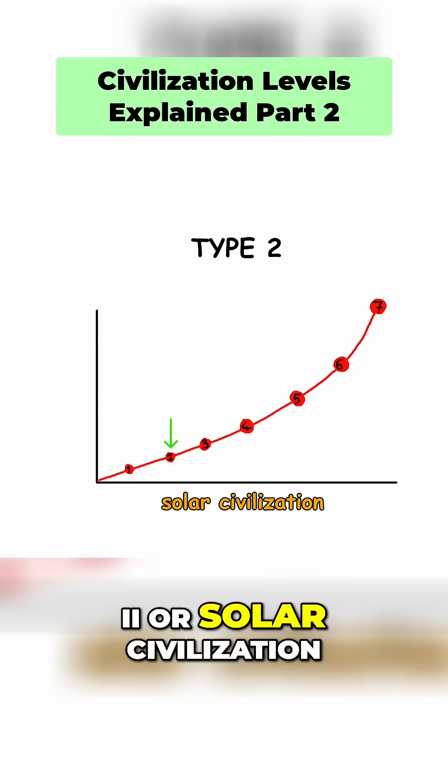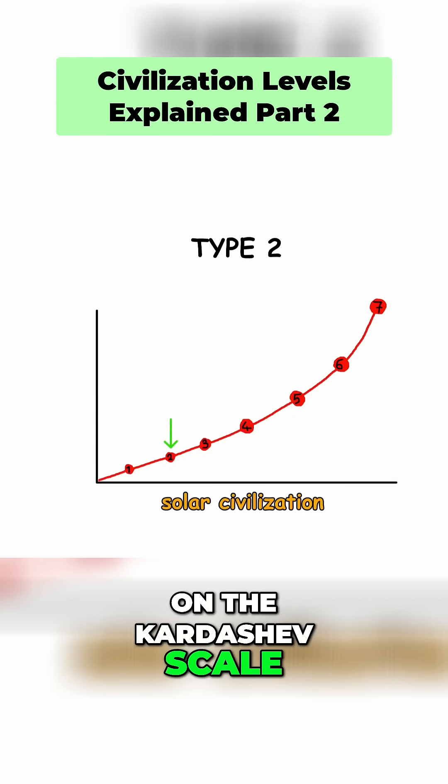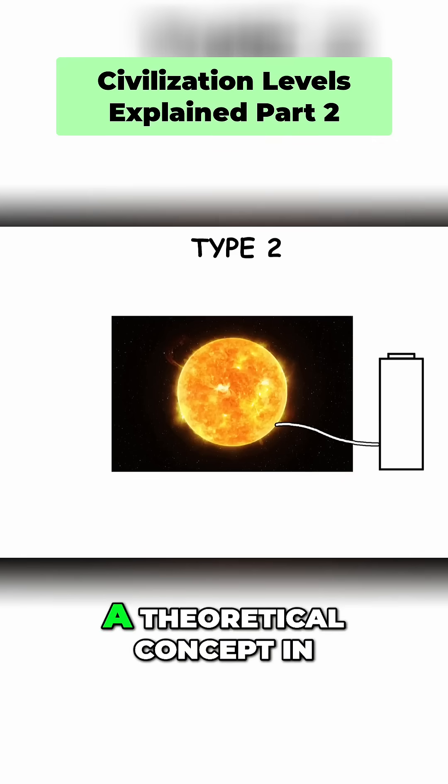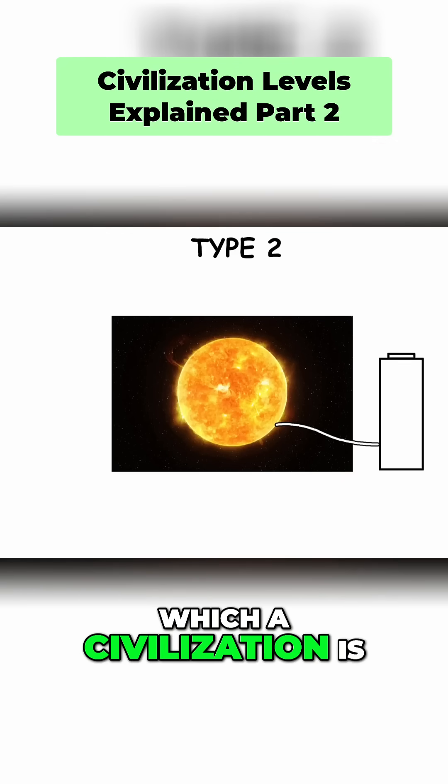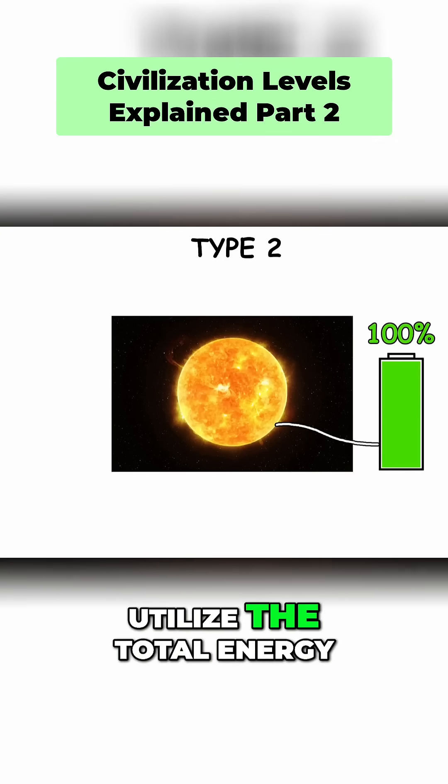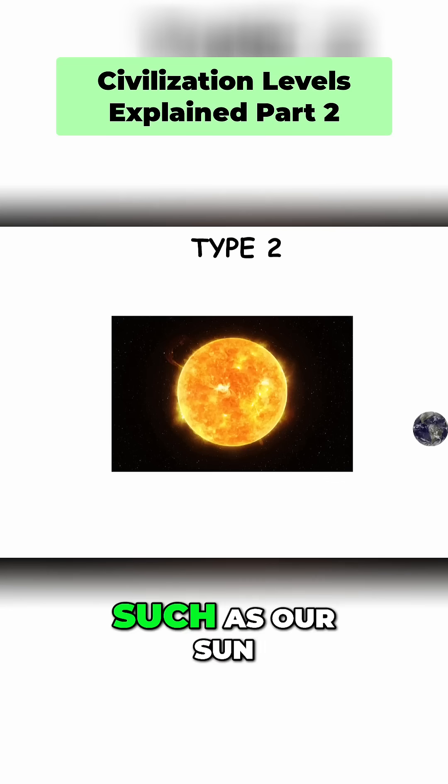Type 2. A Type 2 or solar civilization on the Kardashev scale is one that is capable of star lifting, a theoretical concept in which a civilization is able to harness and utilize the total energy output of its star, such as our sun.